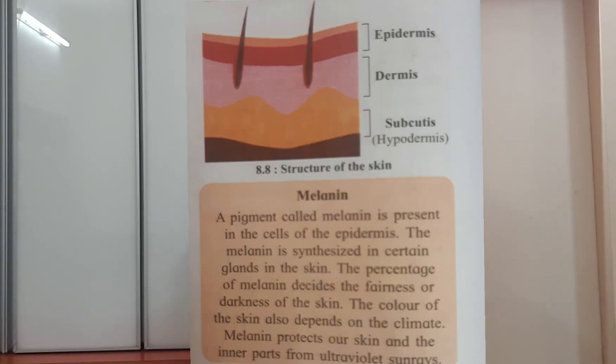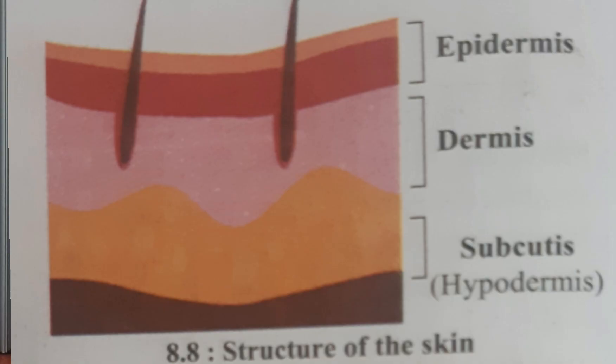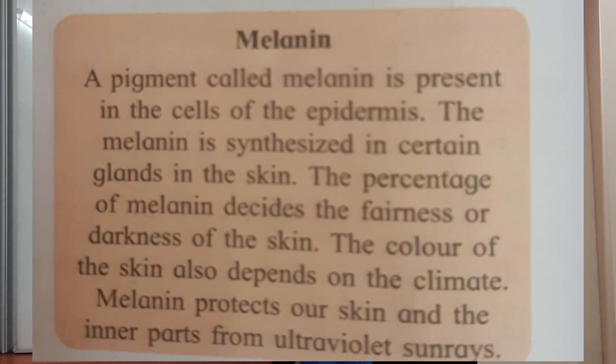A pigment present in the cells of epidermis — Melanin. Melanin is present in the cells of epidermis, and because of the pigment melanin, our skin gets its color. Whether our skin is fair, whitish, or black — these colors are decided by the proportion of melanin in our skin. That's why some people are very fair. The complexions are decided because of this pigment melanin.